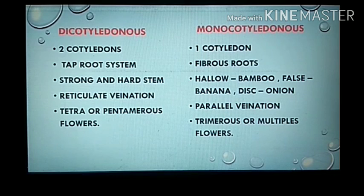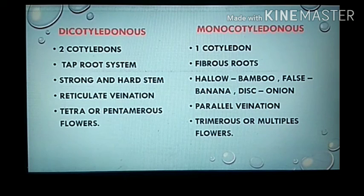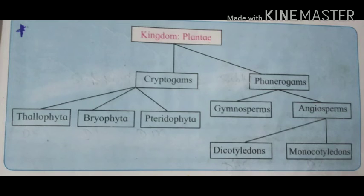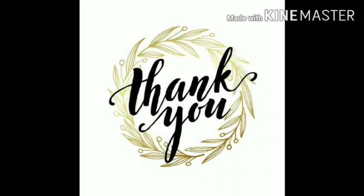These are the differentiating points between dicots and monocots. There is a concept diagram given on page 79 — draw that in your notebooks and also write down the differentiating points and complete the exercise accordingly. If you like this video please like, share, and subscribe, and press the bell icon to get notifications for the next video. Thank you.